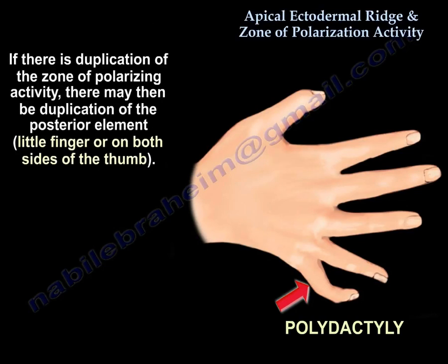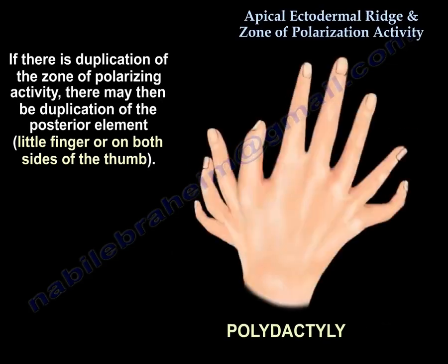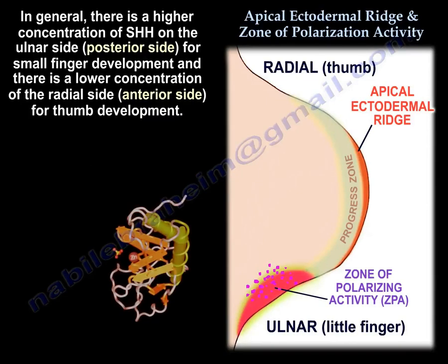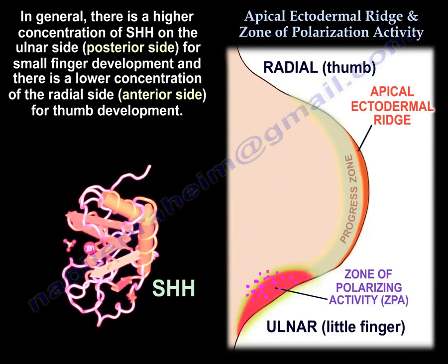If there is duplication of the Zone of Polarizing Activity, you may have duplication of the posterior element — such as the little finger — or elements on both sides of the thumb. In general, there is a high concentration of sonic hedgehog on the ulnar, posterior side for small finger development, and a lower concentration on the radial, anterior side for thumb development.